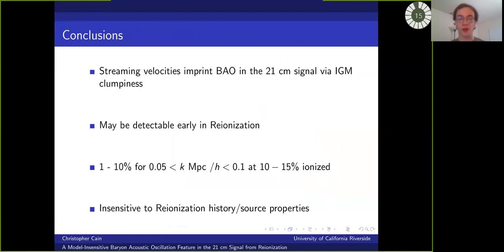So just to summarize, we've demonstrated using numerical simulations combined with analytical models, that the stream velocity can imprint a BAO feature on the reionization 21 centimeter signal through its impact on the ionizing photon sinks that set the recombination rate. And although this signal is likely to be too weak to detect during most of reionization, it may appear at the 1 to 10 percent level at wave numbers between 0.05 and 0.1 H over megaparsecs when the universe is about 10 to 15 percent ionized and the 21 centimeter power spectrum is at a minimum.